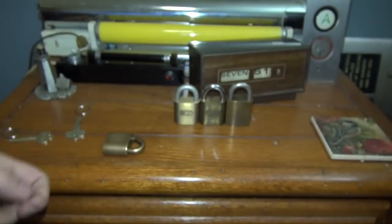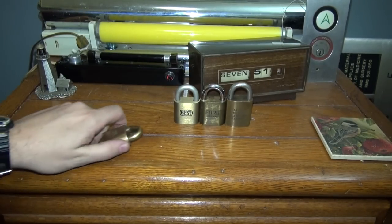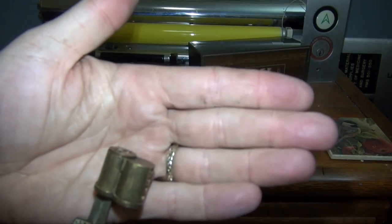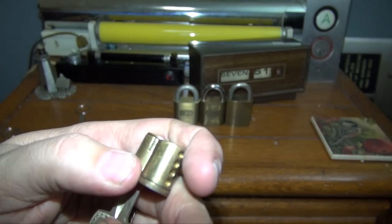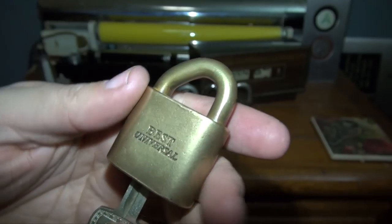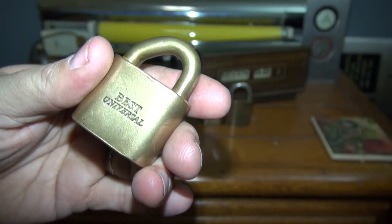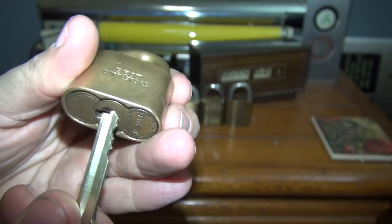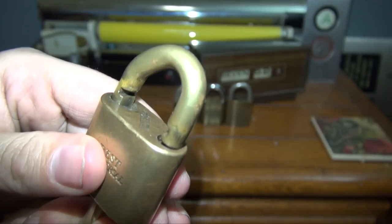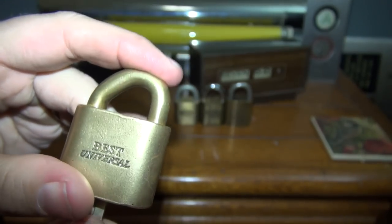So yeah, this is pretty cool. An antique Best interchangeable core padlock. So now let me find the control key again, and we'll put the core back in the lock. Like this. And this will be the end of this quick but interesting padlock demonstration. That'll be it. Hope you enjoyed it.